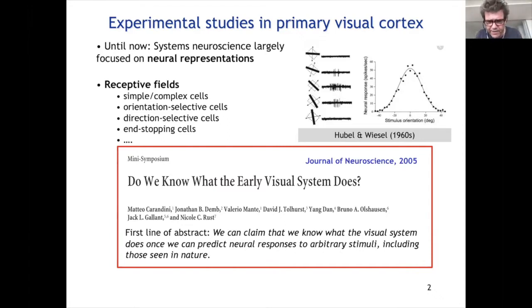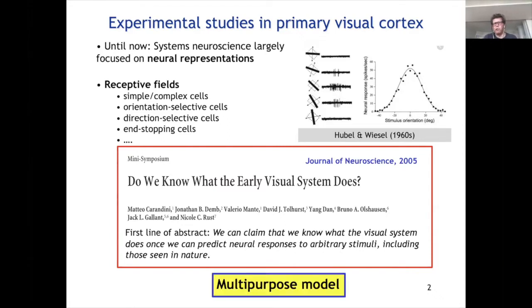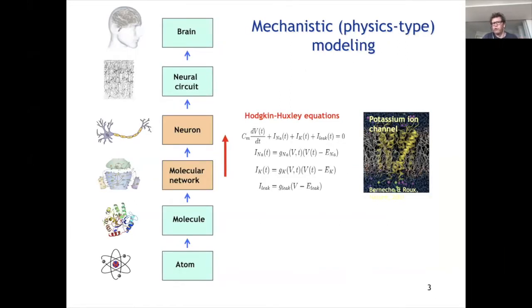What they're really asking for is what we call a multi-purpose model. We need to take into account real biological complexity in these models and put these neurons together in a network to get closer to that goal. The good news is that we know how to model neurons — starting with Hodgkin and Huxley, we now have good neuron models, and there are databases of neuron models corresponding to neurons at different parts of the cortex, other brain regions, and different animals. However, going from neurons to networks is where we are not doing so well.